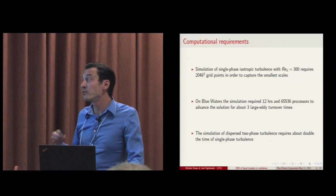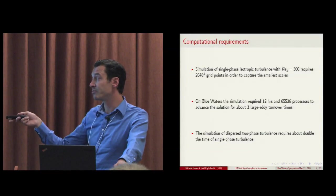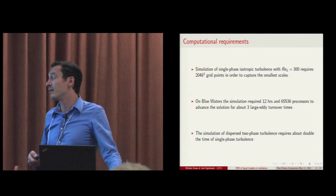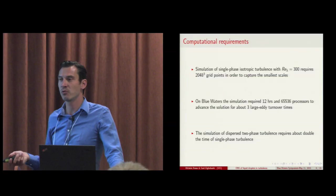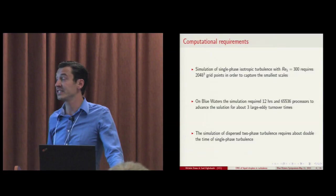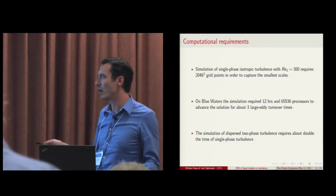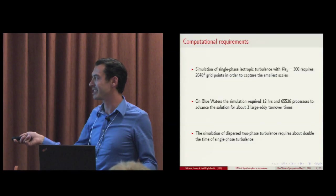So if we have to consider, like we're going to do in the next slides, dispersed two-phase turbulence, we would require about double the time of a single phase turbulence. So that's why for simulations of this type, a computational facility like Blue Water is required. This kind of work cannot be done on regular workstations.